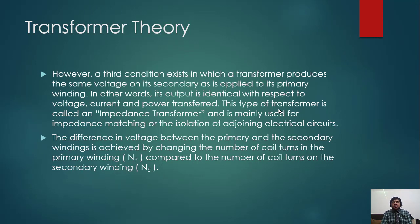The difference in voltage between the primary and secondary winding is achieved by changing the number of coil turns in the primary winding compared to the number of coil turns in the secondary winding. So if the primary side has 10 turns and the secondary side has 10 turns, the voltages will be the same at each side.